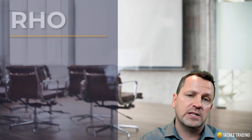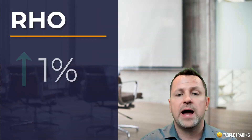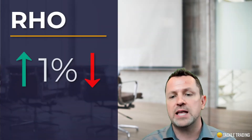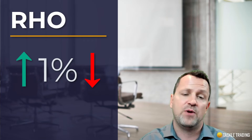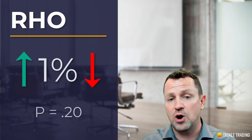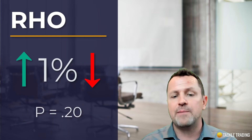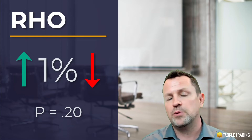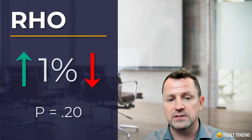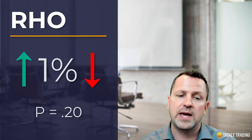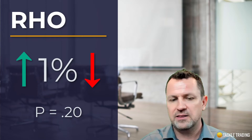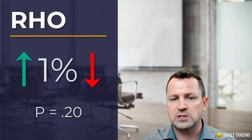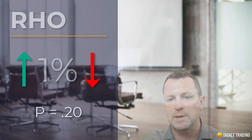If you had an increase of plus or minus 1%, the option premium is going to change at the rate of Rho. If we had a Rho of 0.20, that means the option premium would change 20 cents — that's 20 cents per share. That little letter P you see there is what Rho looks like in the Greek alphabet.